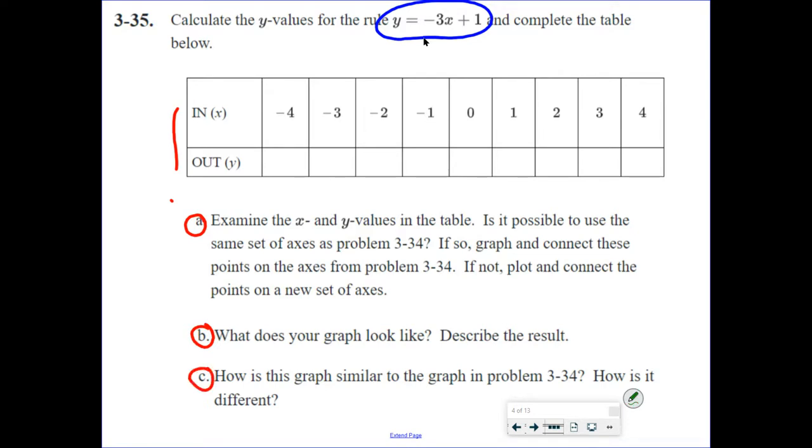But I'm going to start with the table. So, y equals negative 3x plus 1 if x is negative 4. So, y equals negative 3 times negative 4 plus 1. Negative 3 times negative 4 is 12 plus 1, which is 13. So, this value here is 13. And I'm going to do one last one. I'm going to do 4. So, y equals, if x is 4, negative 3 times 4 plus 1. Negative 3 times 4 is negative 12 plus 1 is negative 11. So, there are your values.